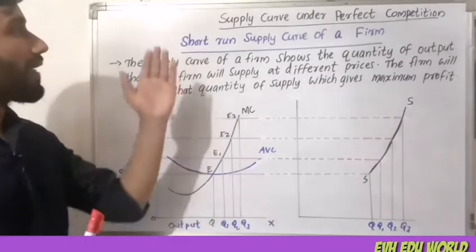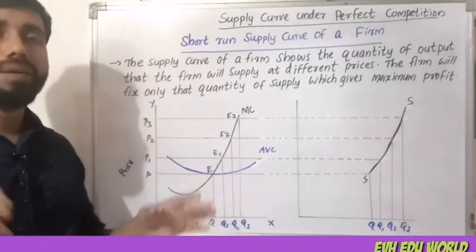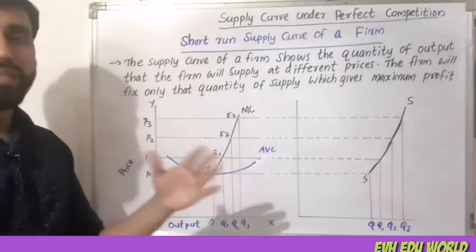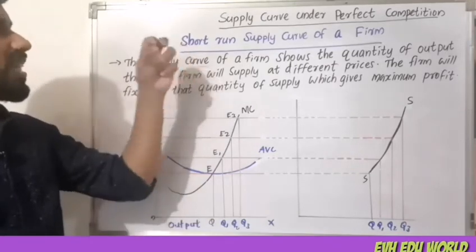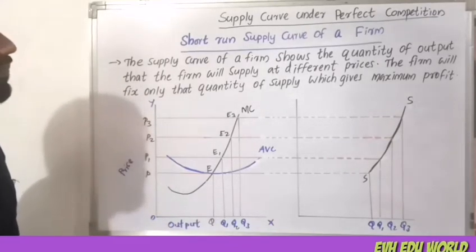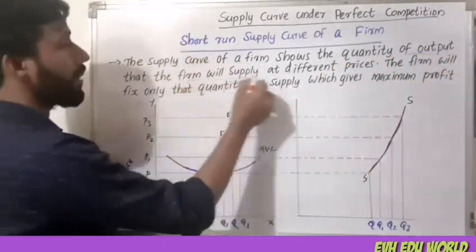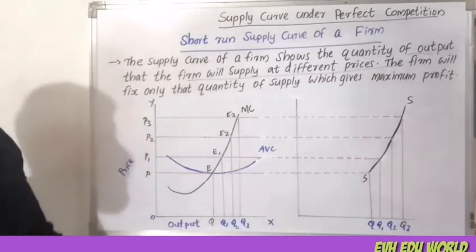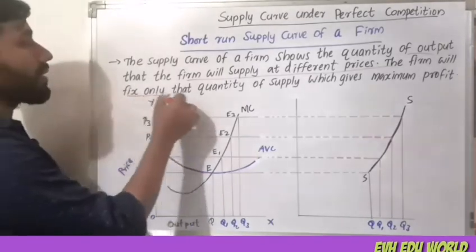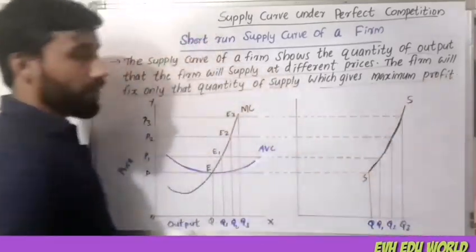In Managerial Economics, the market structure in the case of perfect competition: the firm's short-run supply curve. The supply curve shows the quantity of output that a firm will supply at different prices. The firm will fix only that quantity of supply which gives maximum profit.